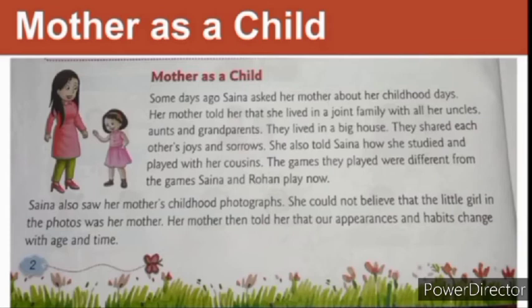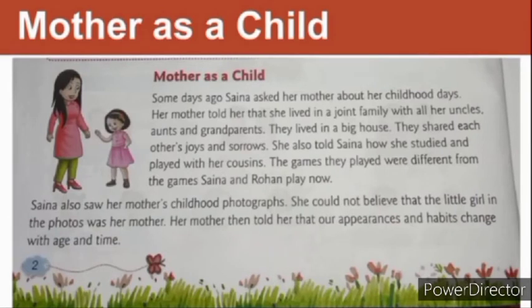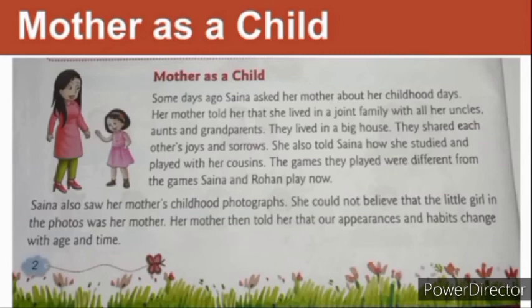Saina also saw her mother's childhood photographs. Saina's mother had some photographs of her childhood days, and Saina saw those photographs. She could not believe that the little girl in the photos was her mother. Saina was very happy to see her mother in her childhood days. Her mother told her that our appearances and habits change with age and time. Underline the word 'appearances' — A-P-P-E-A-R-A-N-C-E-S. Appearance means how we look, and we all change with time.